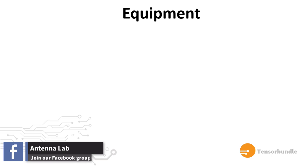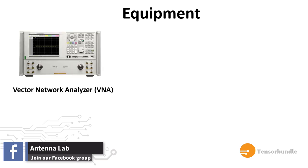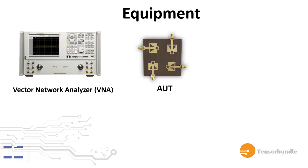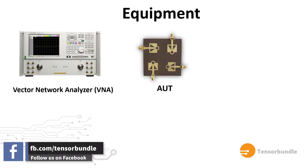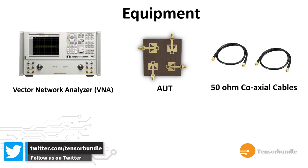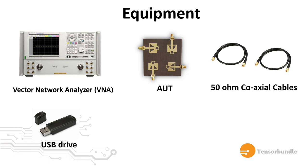Now let's see the list of equipment we need for this experiment. We definitely need a vector network analyzer. We also need the AUT or antenna under test. And then we also need a pair of 50 ohm coaxial cables. I use a V-drive to save the measurement data from VNA for post-processing. And finally, we also need a pair of 50 ohm broadband RF load terminations.